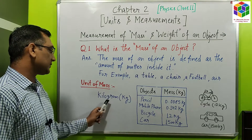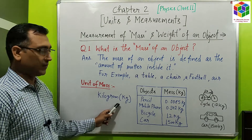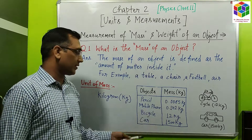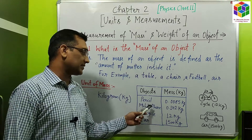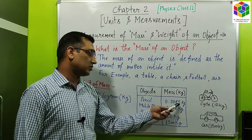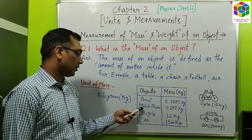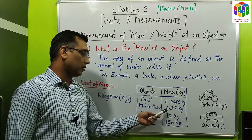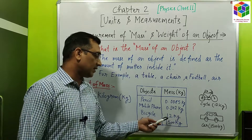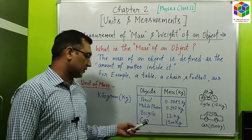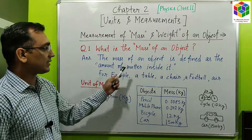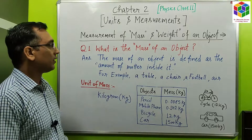The unit of mass is kg. Here some more examples are given: a pencil which has a mass of 0.0085 kg, a mobile phone 0.142 kg, a bicycle 12 kg, a car 1500 kg. So these are the examples of mass.